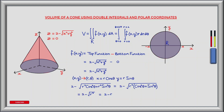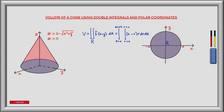Now converting the height component from Cartesian to polar coordinates we substitute r cos θ for x and r sin θ for y. This gives 2 minus the square root of r² cos²θ plus r² sin²θ. Simplifying, we get 2 minus the square root of r² times (cos²θ plus sin²θ). Using the trig identity cos²θ plus sin²θ equals 1, we get 2 minus the square root of r², and taking the positive square root gives the height component 2 minus r.